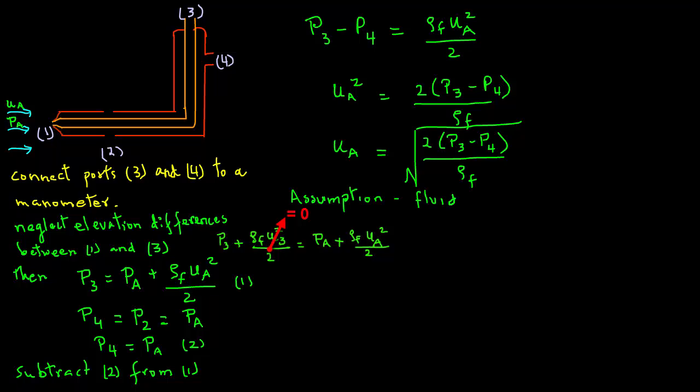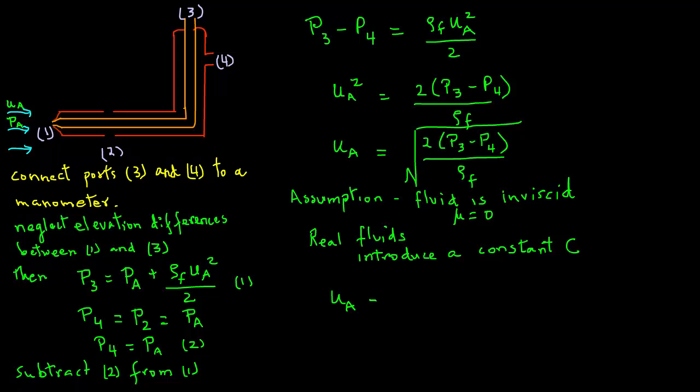For Bernoulli equation, we make certain assumptions, one being that fluid is inviscid—in other words, the viscosity is zero. However, we use Pitot tubes for real fluids such as water, air, and so on, and those fluids have viscosity. So we introduce a constant C, and we have UA equals C times square root of 2 times P3 minus P4 divided by rho F. This is our equation that we can use